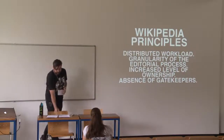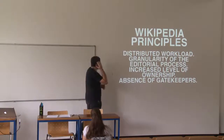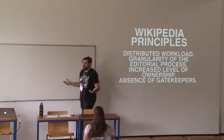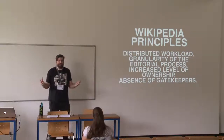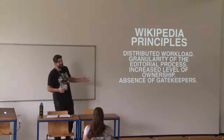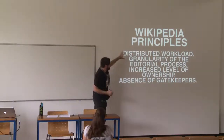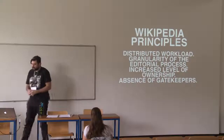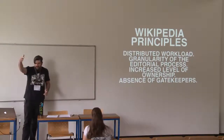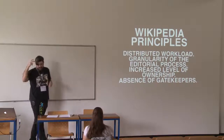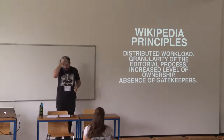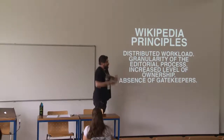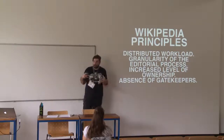What I wanted to concentrate on today is the idea of Wikipedia principles. My supervisor Axel Bruns — I get gold stars for using his produsage theory — identified four key areas observed within Wikipedia: distributed workload, granularity in the editorial process, increased level of ownership, and absence of the gatekeeper. As we've seen in Wikipedia, the distribution of workload encourages more people to contribute, greatly increasing the rate of material produced — something similar happens in ABC Pool.